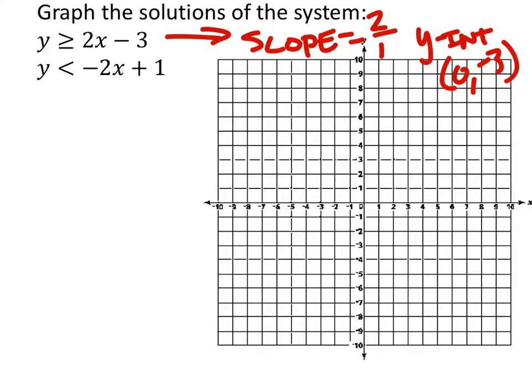Alright, let's try this again. 0, negative 3, up 2 to the right one, up 2 to the right one. Hopefully that looks better, and continuing it to the left. And this line will be dashed or solid? Solid. This one will be solid, very good.